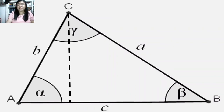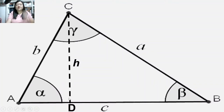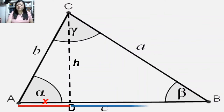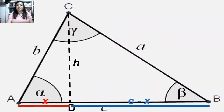When we draw a line perpendicular to our base C, which serves as the height of the triangle, we can create two different triangles: triangle ADC, where the right angle is at D, and triangle BDC, where the right angle is still at D. The length of AD will be represented as X, and the length of DB will be C minus X, because the length of the whole side AB is C.